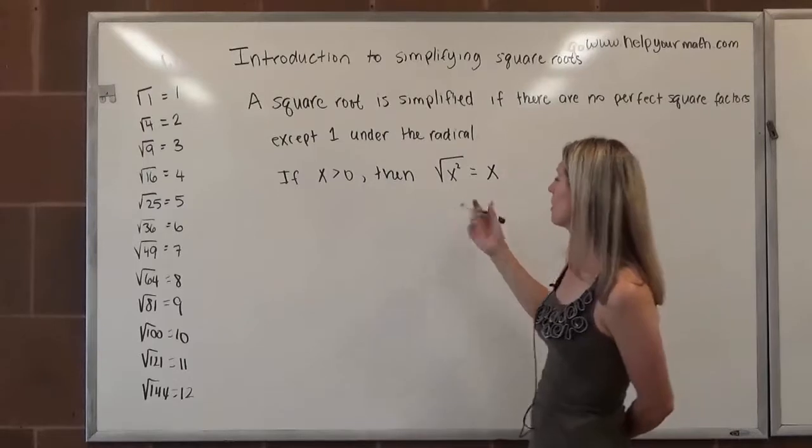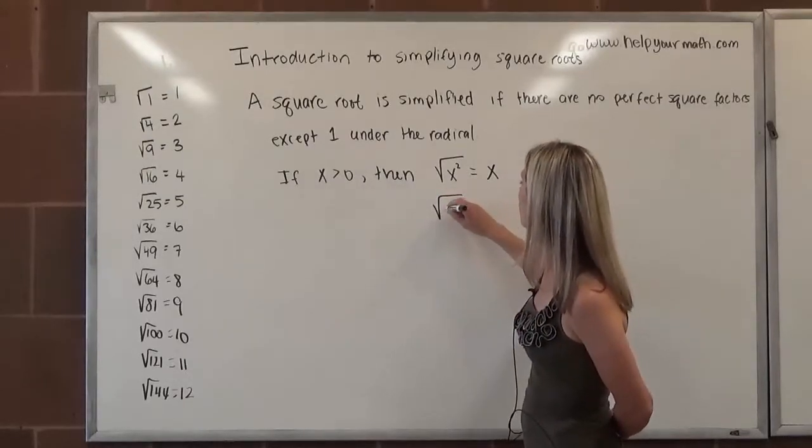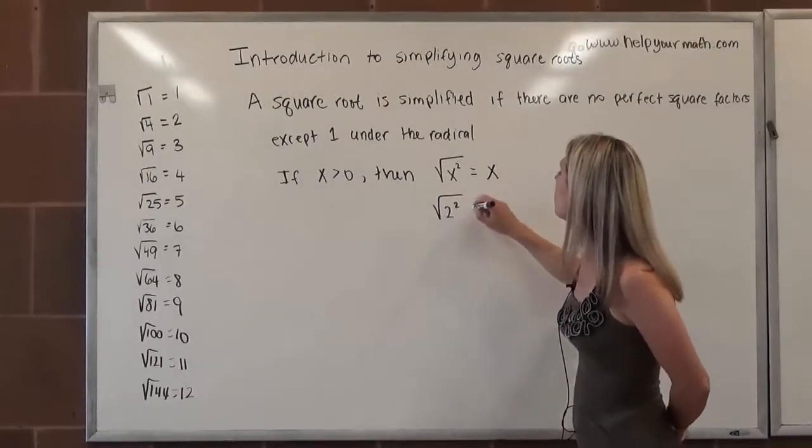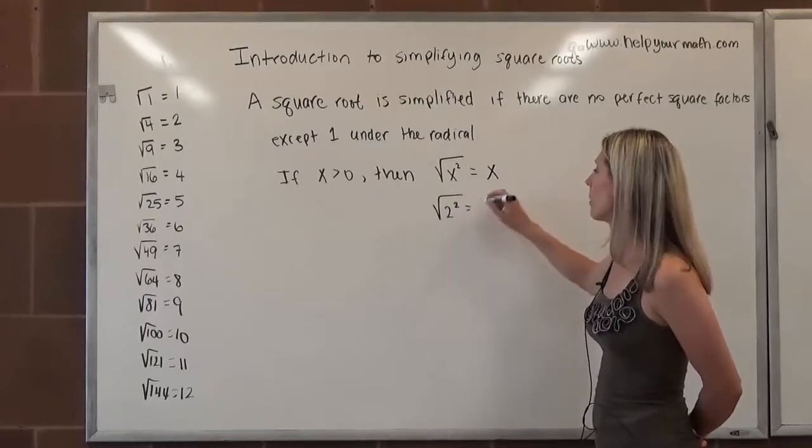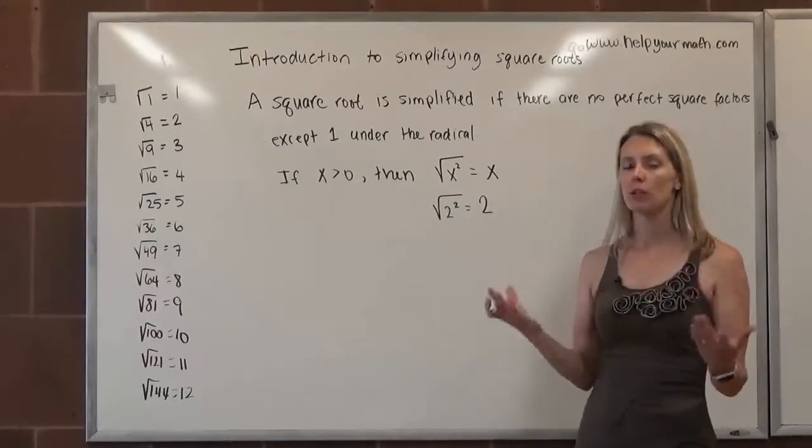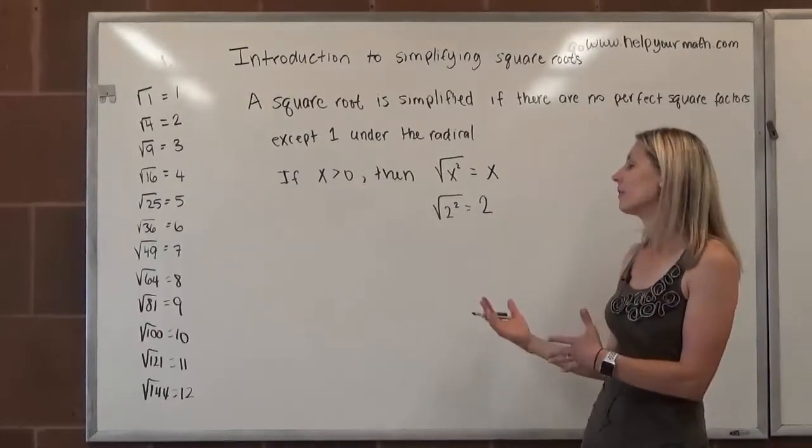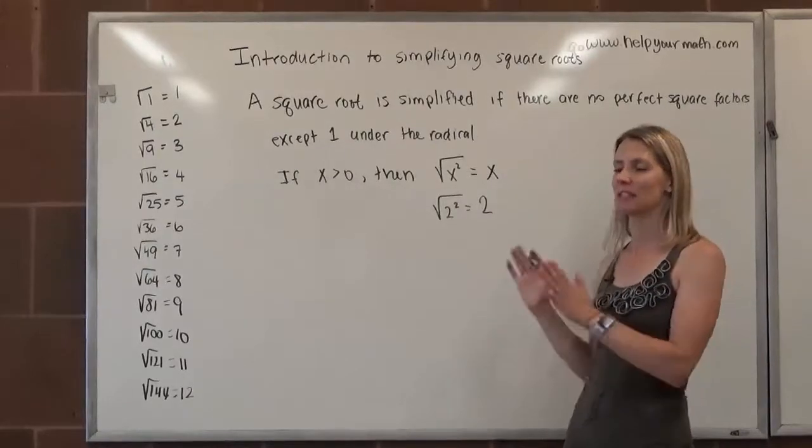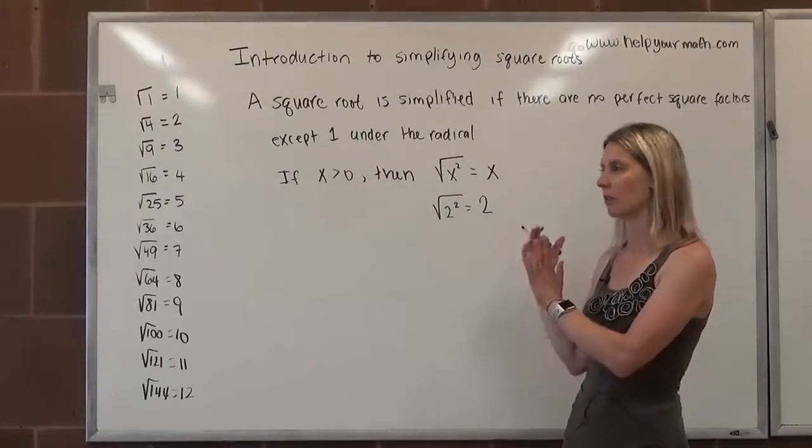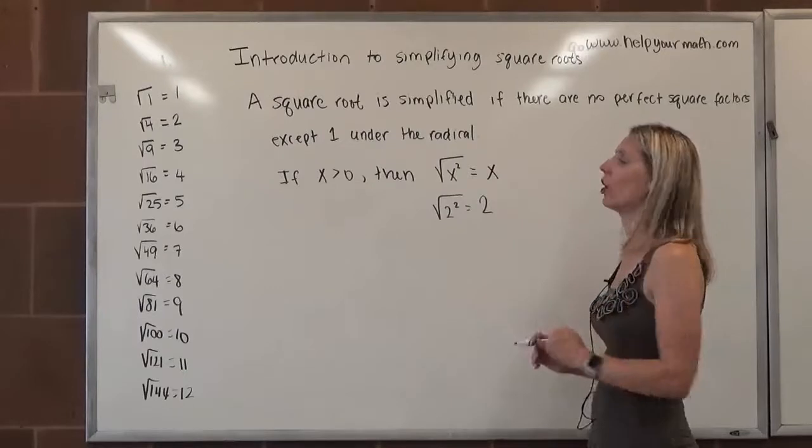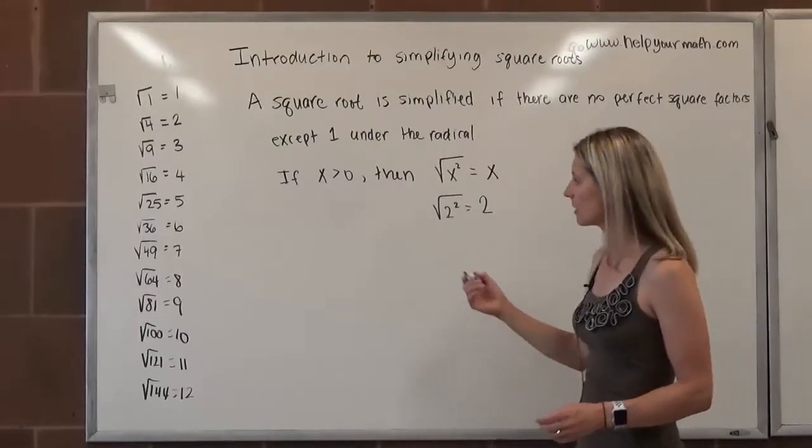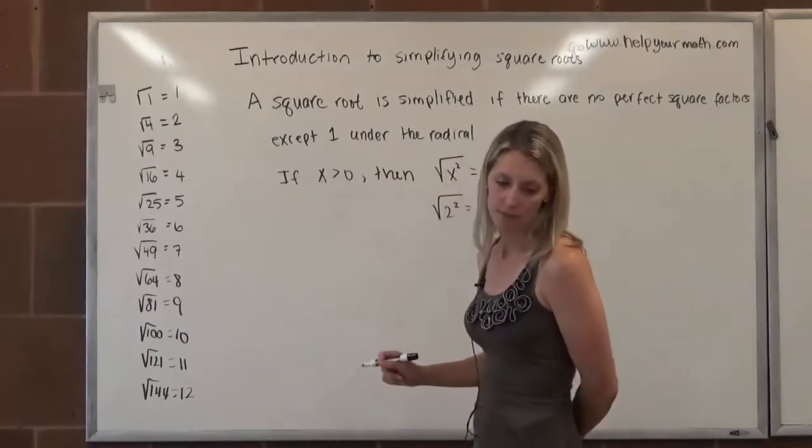And we can put this to the test. So if we have the square root of 2 squared, well, 2 squared is 4 and the square root of 4 is 2. So if you want to, you can skip a step. If this is helpful, great. If it's not, don't worry, you don't have to use this. There are other alternate strategies. So now let's look at some examples of simplifying radicals.